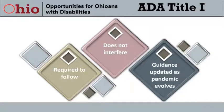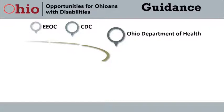Where can employers find this information? We included commonly referenced resources in the Learner's Guide along with their websites. For example, the EEOC has a website called Coronavirus and COVID-19, which includes the Pandemic Preparedness in the Workplace and the ADA, and What You Should Know About COVID-19 and the ADA, the Rehabilitation Act, and other EEO laws. The CDC has a website called COVID-19, and the Ohio Department of Health has a website called Coronavirus COVID-19.